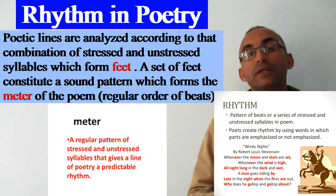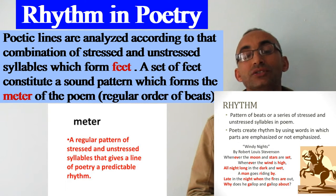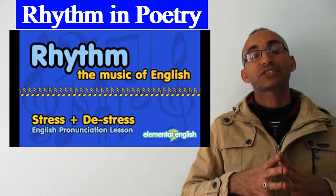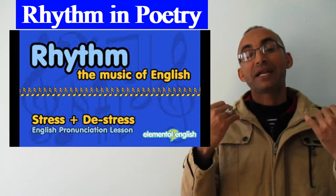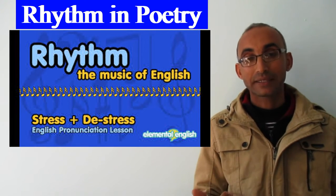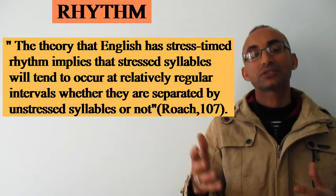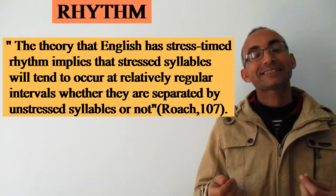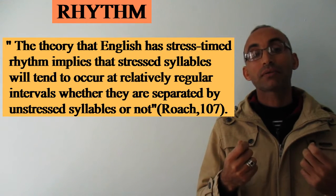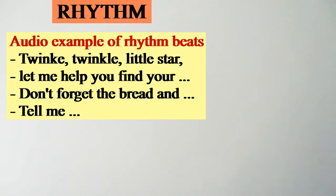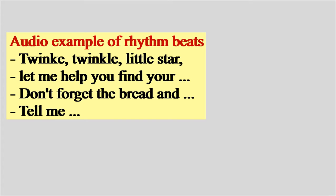To summarize today's lesson: rhythm — English is a very rhythmic language, and rhythm is the music of the English language. We must consider those beats when pronouncing English and place them on the stressed content words, in addition to other features like pitch, loudness, intonation, and so on, to give English its natural spirit like native speakers. For example: 'Twinkle, twinkle, little star,' 'Let me help you find your key,' 'Don't forget the bread and milk,' 'Tell me why you don't agree.'